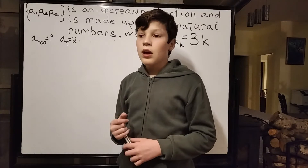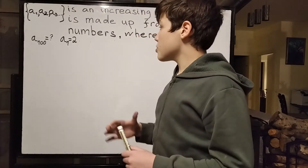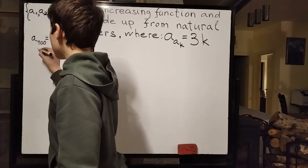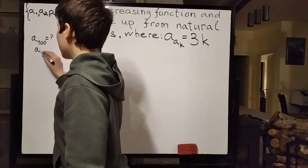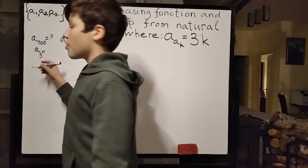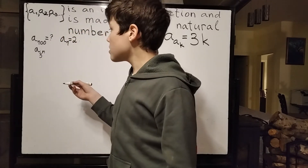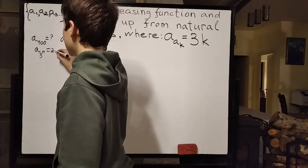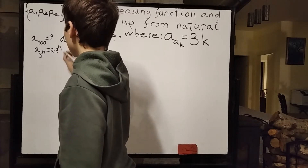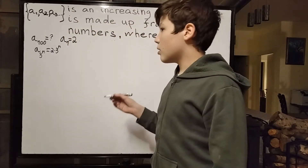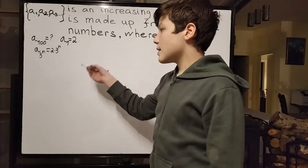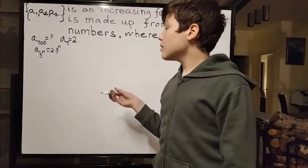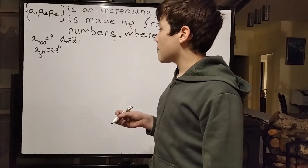Now we will prove, generally — as a guess at first — that a of 3 to the n, with n being a non-negative integer, so a of any power of 3 is exactly 2 times that power of 3. In other words, when n is a non-negative integer, a of 3 to the n is equal to 2 times 3 to the n. And we'll prove that by induction.